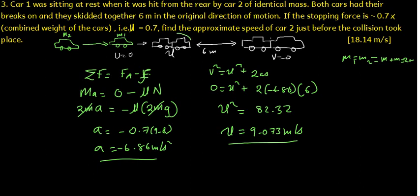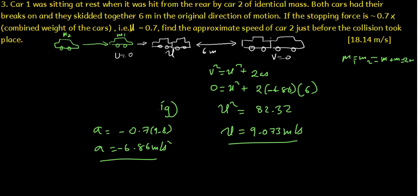So this is the velocity at which both of them were moving initially at the beginning when the second car hit the first car. Now we want to find the velocity at which the first car was moving just before the collision, just at the point before impact. So we are going to use the momentum equation to find that.